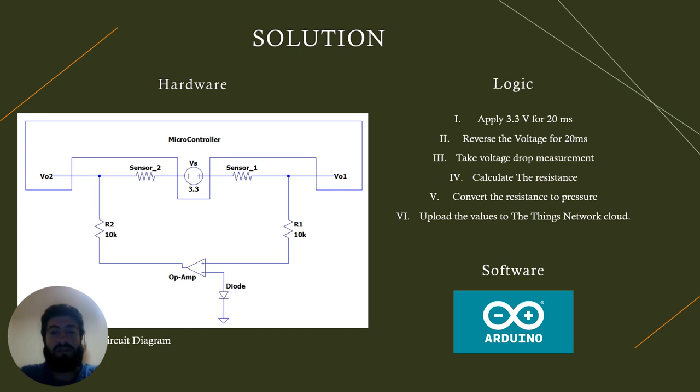To solve that I designed the system. It consists of an Adafruit Feather microcontroller with built-in LoRa technology, two sensors, two resistors and an operational amplifier and a diode. The microcontroller supplies electrical current with a voltage of 3.3 volts then switches the direction in less than 50 milliseconds. It takes a measurement of the voltage drop and converts it to resistance then converts it to pressure. These pressure values are uploaded to a cloud called TTN or the Things Network, a cloud that supports Adafruit devices using LoRa. LoRa is just a wireless communication technology. It's like Wi-Fi or cellular but it's faster and operates over a wider range.